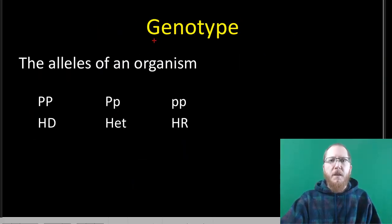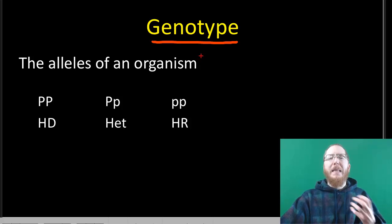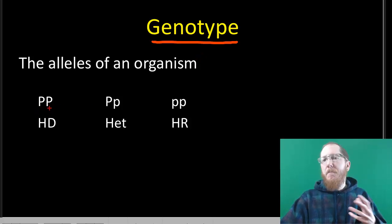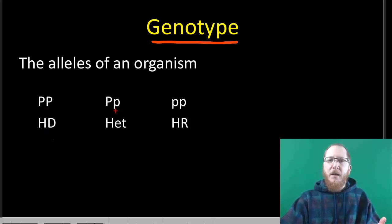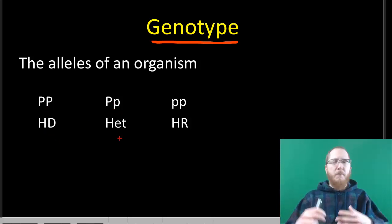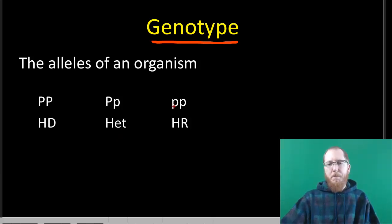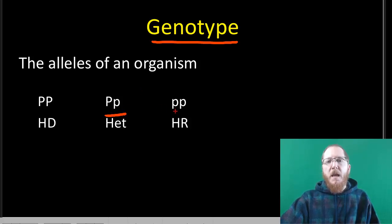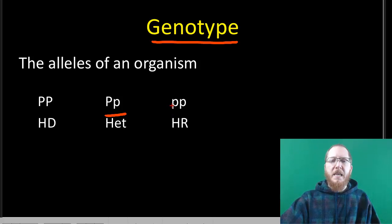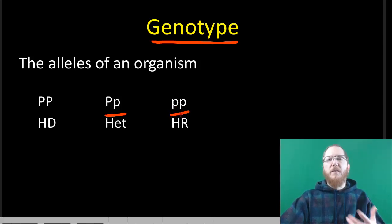Genotype is the description we use to describe your alleles, and it will typically be written as letters. For example, big P big P, or big R big R, would be homozygous dominant. A heterozygote would be written as big A little a, big T little t, or big P little p — always two different alleles. Homozygous recessive is the last genotype type, written as two lowercase letters representing two recessive alleles.